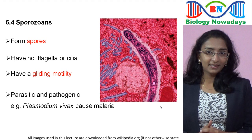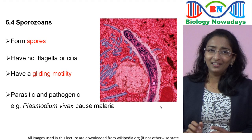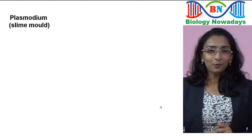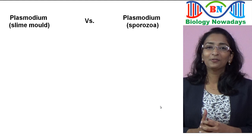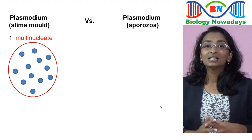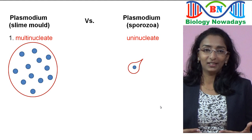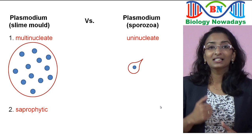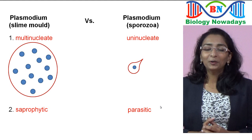Now we have covered all the members of Kingdom Protista. Some of you may be confused because the term 'plasmodium' was used in two different places — once under slime molds and once under sporozoans. The slime mold plasmodium is a multinucleate vegetative structure formed by aggregation of individual slime mold cells. The sporozoan Plasmodium is the name of the malarial parasite and is uninucleate. Slime mold plasmodium is saprophytic, feeding on decaying twigs and leaves, while sporozoan Plasmodium is parasitic, causing malaria in humans.